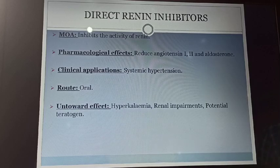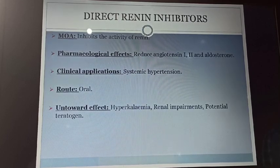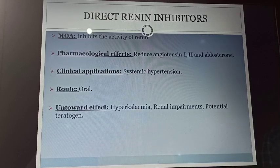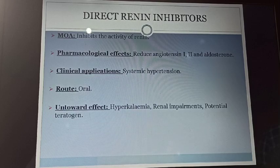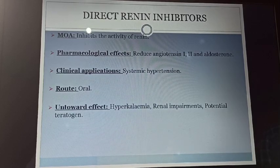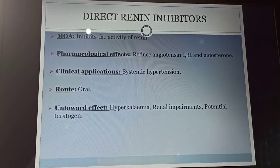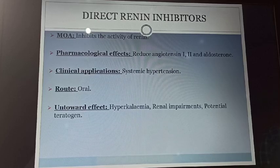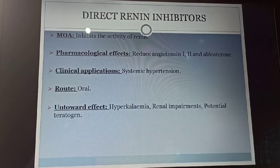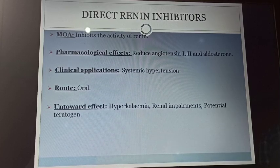Next class of drug is direct renin inhibitors. Only one example is there in this category. The mechanism of direct renin inhibitors is it inhibits the activity of renin. Renin is an enzyme produced by the JG cells of the kidney when blood pressure is low. When systemic hypotension occurs, JG cells of the kidney produce renin, which is responsible for the conversion of angiotensinogen to angiotensin-1. Its pharmacologic effect is it reduces the production of angiotensin-1 as well as angiotensin-2 and aldosterone. We can use this drug in the treatment of systemic hypertension. It can be administered through oral route. Adverse effects are hyperkalemia, renal impairments, and it is a potential teratogen.